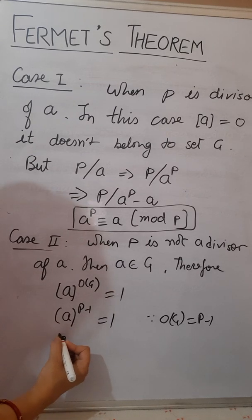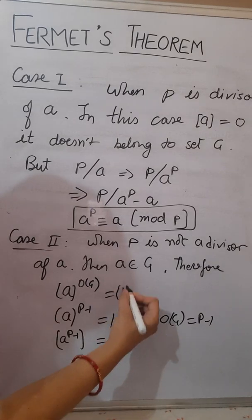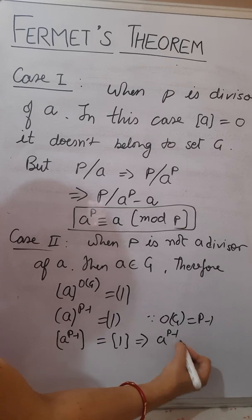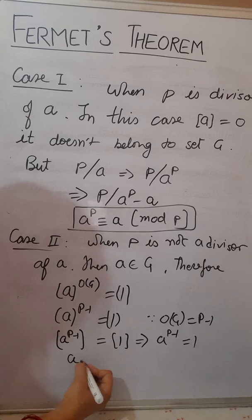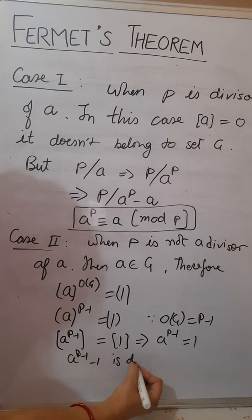We can write as a to the power p minus 1 is equals to 1 or a to the power p minus 1 is divisible by p. It implies a into a to the power p minus 1 minus a is also divisible by p.